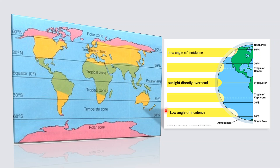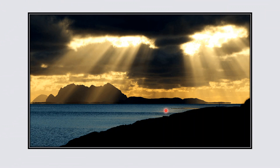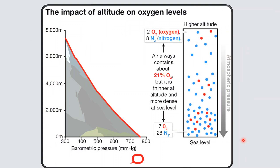Apart from latitude, altitude also plays a very important role. The atmosphere mainly gets heated by terrestrial radiation. The sun's energy is absorbed by the surface of the earth and radiated out in the form of long waves. The denser lower layers, containing more gas molecules, water vapour, and dust particles, absorb terrestrial heat by conduction. At higher levels, the density of air decreases as the air is rarefied.